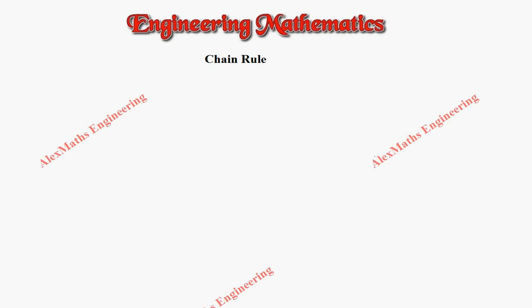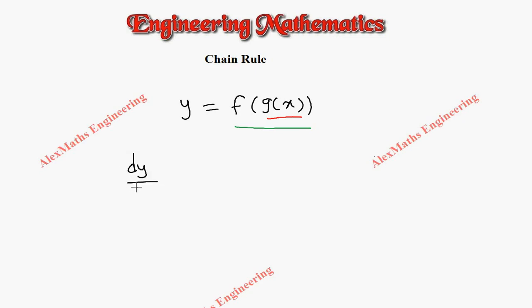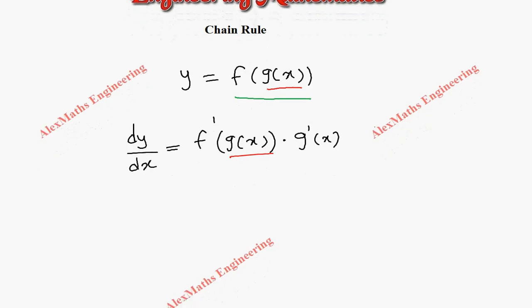Hi students, this is Alex. In this video we will learn about the chain rule. Suppose there is a composite function y = f(g(x)), where g(x) is the inner function and f(x) is the outer function. When we want to find the differentiation of this term, we write dy/dx: first we differentiate the outer function, so f differentiation is f', and the inner function should be written as it is, then multiplied by the differentiation of the inner function, which is g'.